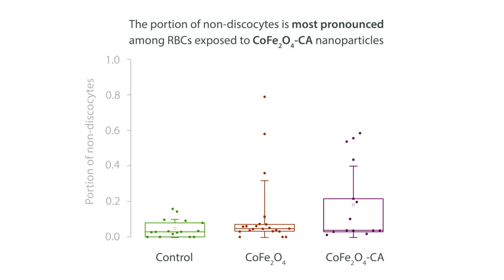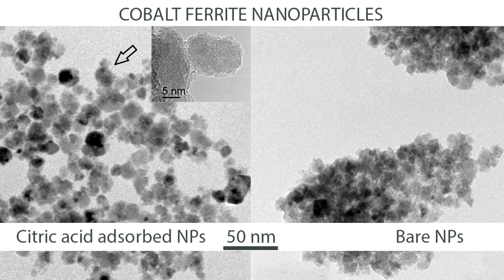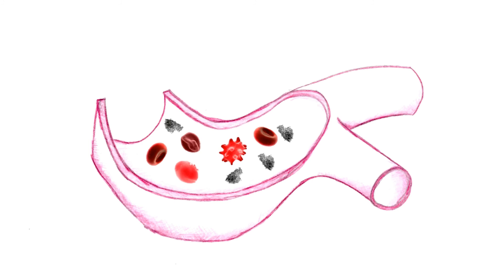When citric acid is absorbed to these nanoparticles, it lowers their agglomeration in suspension and alters their biological reactivity. We conclude that the size of nanoparticle agglomerates has a notable effect on their potential to disrupt both artificial and biological membranes.